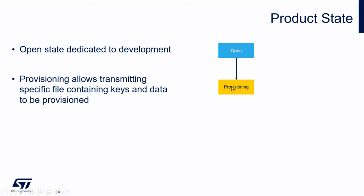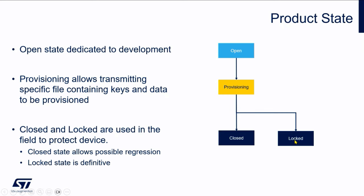Dedicated for development is the open state. Then we have a new provisioning state — a specific state where you can send provisioning data and files; the device is waiting in a dedicated state for provisioning data. And then two other states: the closed state and the locked state. There are some intermediate states related to TrustZone-enabled configurations, but here you only need to care about these. The closed state is where you are able to come back to open state — in some ways the equivalent of RDP level 1. The locked state is definitively locked, equivalent to RDP level 2.